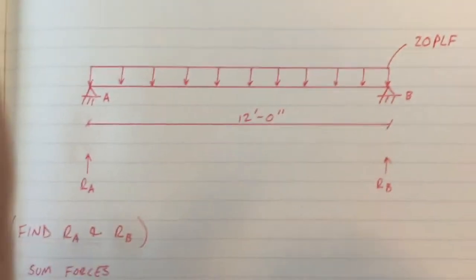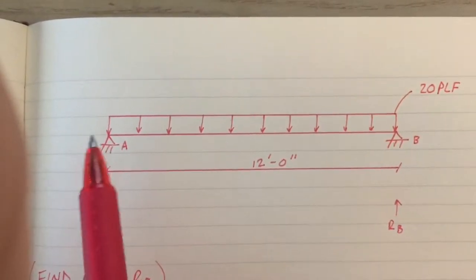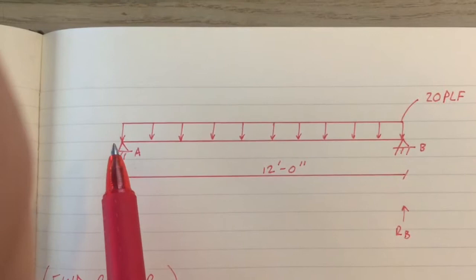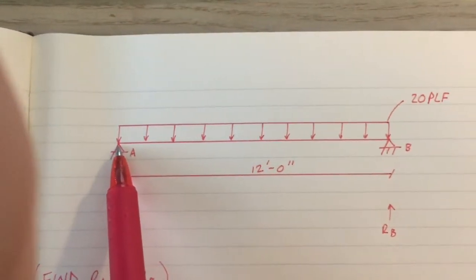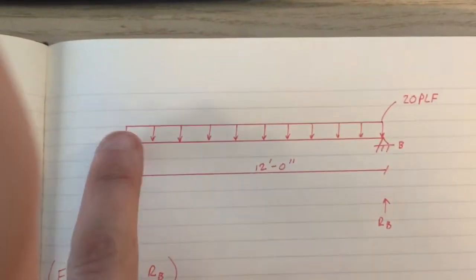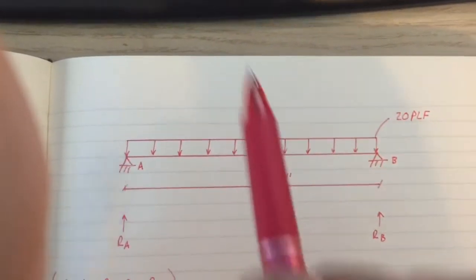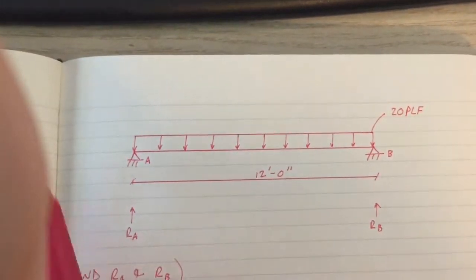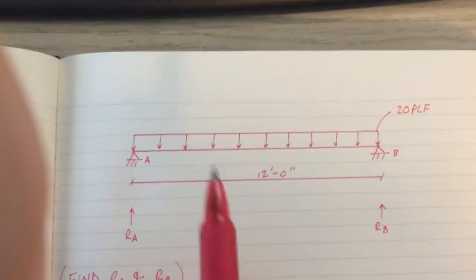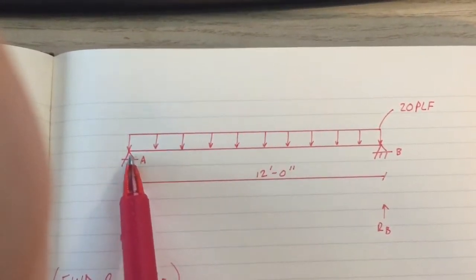What that means is we're going to be taking all the moments summed about a singular point. I've chosen this point to be that area. If you were to imagine putting your finger or a pin on that location and everything else spinning around that location, that's how we're going to be solving for our moments. Our moment is being solved about point A.